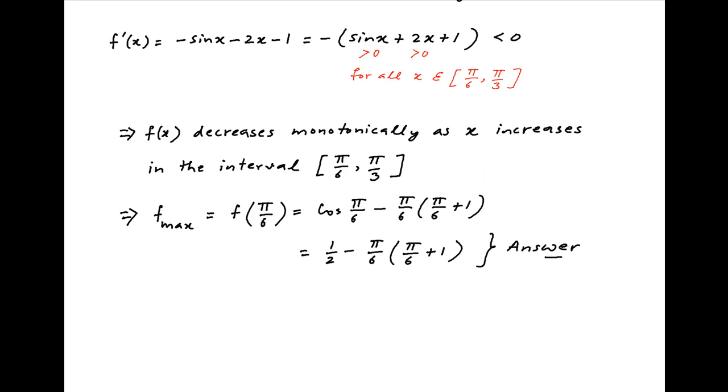Again, as f decreases monotonically as x increases, therefore the minimum value of f(x) is achieved at the higher end of the given interval, that is at x = π/3. Therefore, the minimum value of f(x) is equal to f(π/3) which is equal to cos(π/3) - π/3(π/3 + 1). And this is equal to √3/2 - π/3(π/3 + 1).